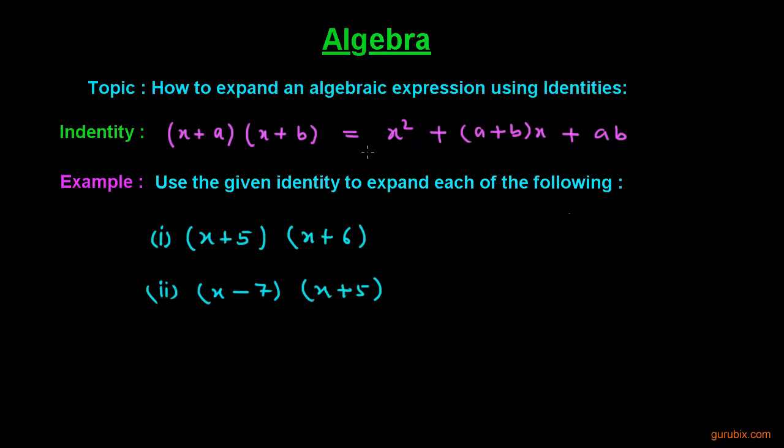equals x² + (a + b)x + ab. We have to find the product of these two parts of the given example by using this identity.